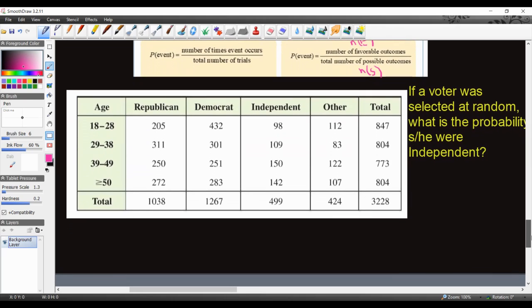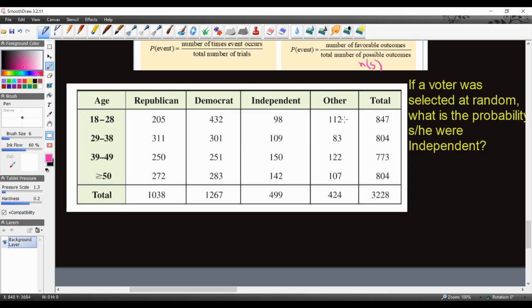So with that in mind, I have some information for you on this example here. We have a chart here of voters at different ages and who they voted for. So for instance, in the age group 18 through 28, 205 voted Republican, 432 voted Democrat, 98 voted Independent, 112 did Other, and the total of this is 847. So there was a total of 847 voters that were 18 through 28. So let's go ahead and see if we can answer a question. It says, if a voter was selected at random, so that means that any of these guys. What is the probability that she or he were Independent? So Independent would be this column right here.